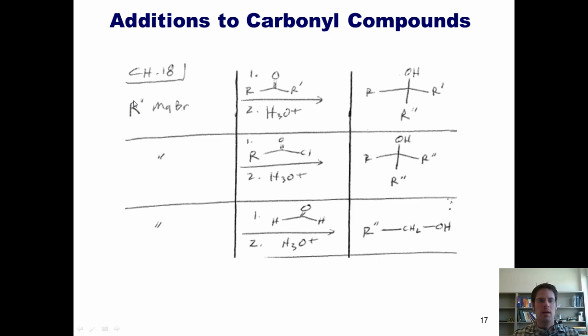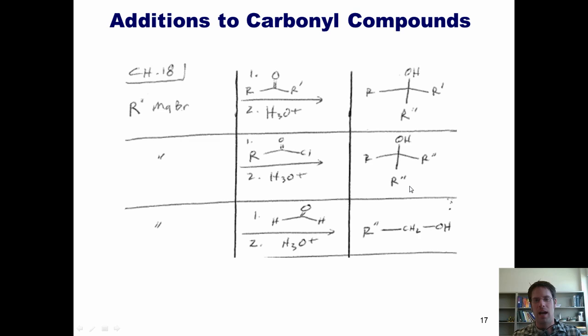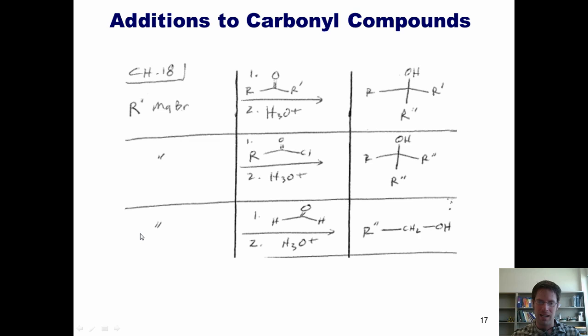Now, Grignard additions to aldehydes and ketones: the R⁻ comes into the carbonyl, and because there's no good leaving group, quenching with acid gives a tertiary alcohol. If you add a Grignard into an acid chloride, electrons go up then down, kicking off chloride to give a temporary ketone intermediate — but a second Grignard molecule adds in again, ultimately giving a tertiary alcohol. Thus, you can't add a Grignard into an acid chloride and have it add only once. If you treat a Grignard with formaldehyde and protonate, you get a primary alcohol extending the chain by whatever alkyl group is on the Grignard.